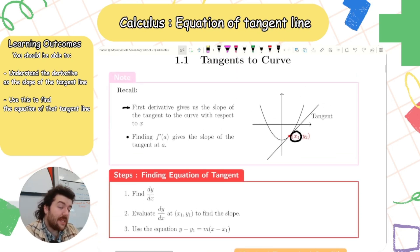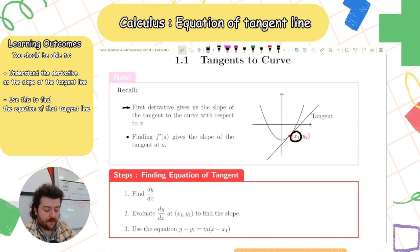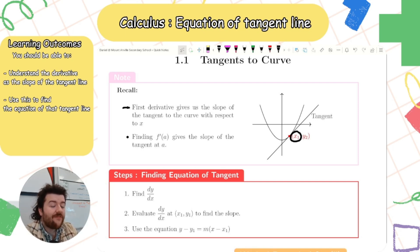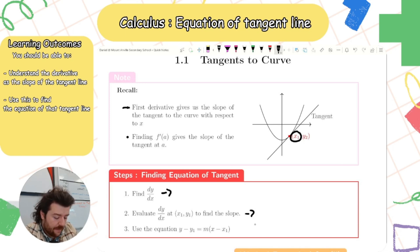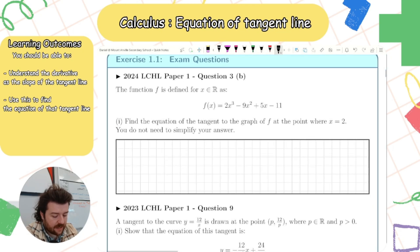Sometimes we're asked to find the equations of certain tangents. For the equation of a line we need a point and a slope. Usually they will give us a point or a coordinate, and then we need to find the slope by finding the first derivative and substituting in the given x value. So: find dy/dx, evaluate dy/dx at the given point, then use the equation of a line formula.